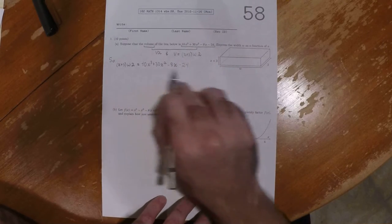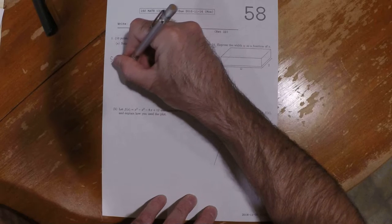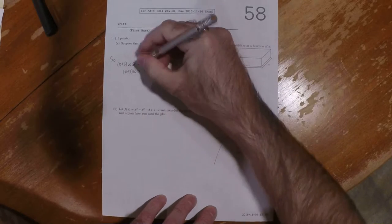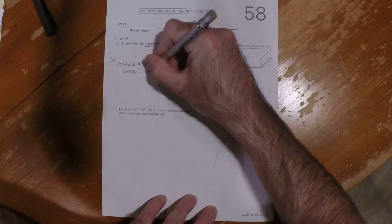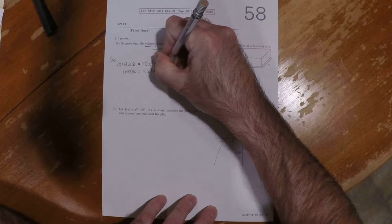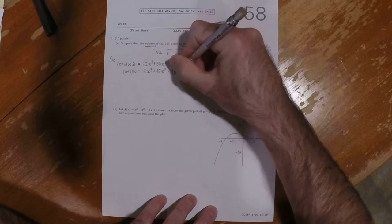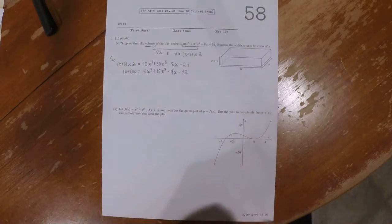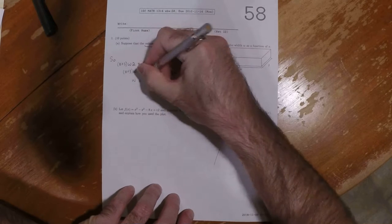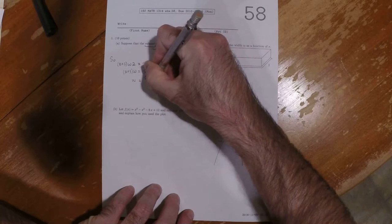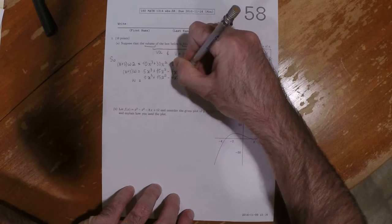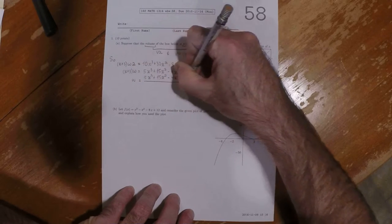So we can divide both sides by 2. And when we do that, we have x plus 3 times w is 5x cubed plus 15x squared minus 4x minus 12. And then divide by x plus 3. So w is 5x cubed plus 15x squared minus 4x minus 12 and then divide by x plus 3.